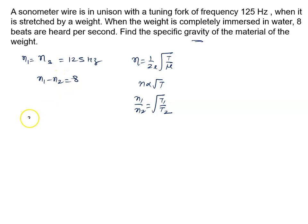The specific gravity is given by relative density. Specific gravity is given by weight in air upon weight in air minus weight in water. What is the weight in air? We say it is T1 and weight in water we say it is T2.